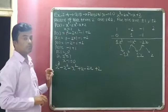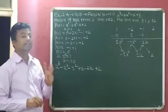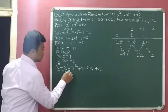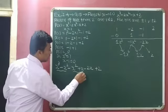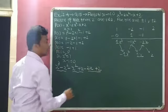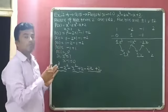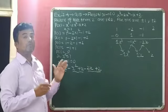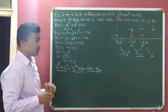Now see given: here in the given question, there are 3 pairs. See, it is the first pair, it is the second pair, and it is the third pair. From each term, we will take one.